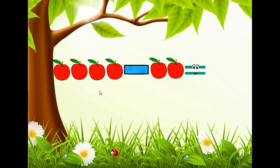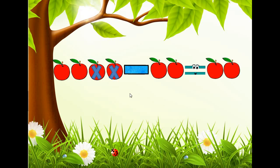4 apples minus 2 apples equals what? When I take 2 apples from 4 apples, I will take away or remove 2. 1, 2. How many apples are left with me? 1, 2. So, 4 minus 2 equals 2.